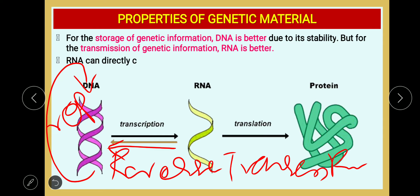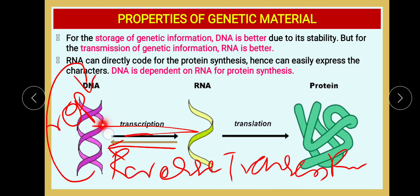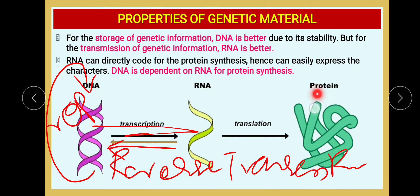RNA can directly code for protein synthesis and easily express a character, whereas DNA is dependent on RNA for protein synthesis. DNA cannot code directly for protein; in order to synthesize protein, DNA must produce RNA by the process of transcription. To express a character, RNA is required. DNA is a better structure for storing genetic information, whereas RNA is a better structure for expressing a character.